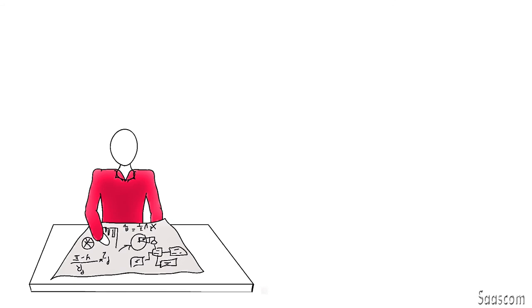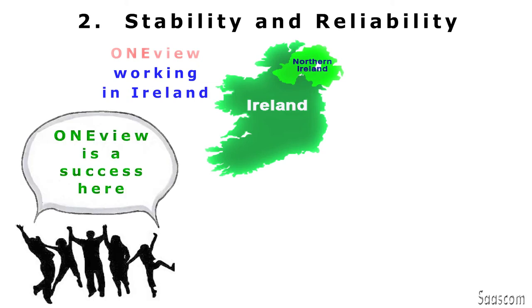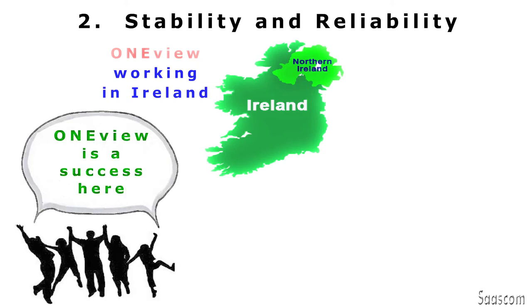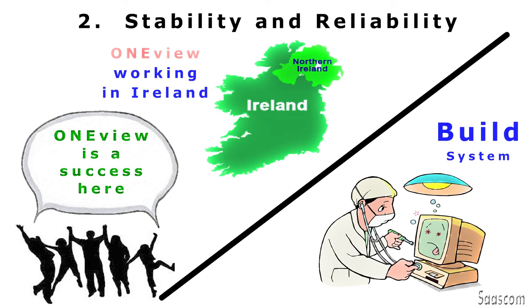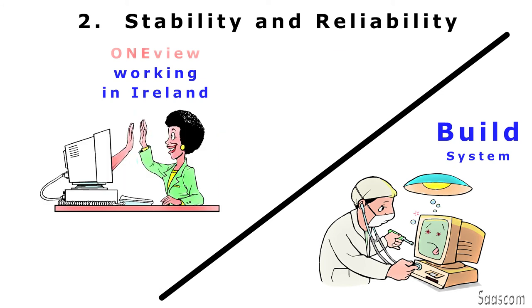The second factor he considered was stability. OneView was working in Ireland, and was branded a success by the local company. A new development would have bugs, and the solution would be unstable for a good period while these bugs were ironed out. Again, the fact that OneView was a proven solution made it the leading contender.